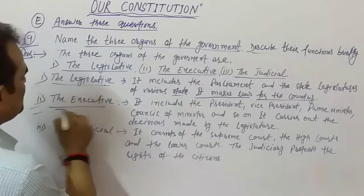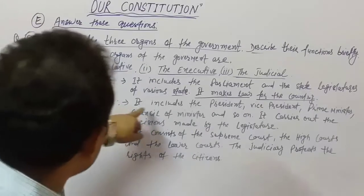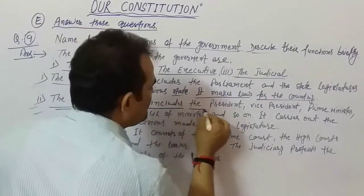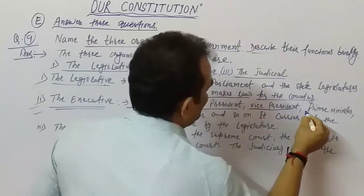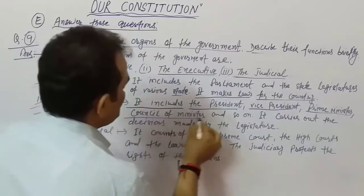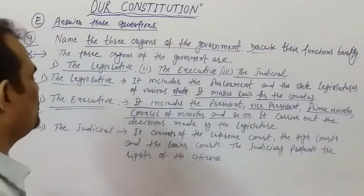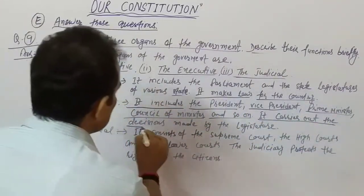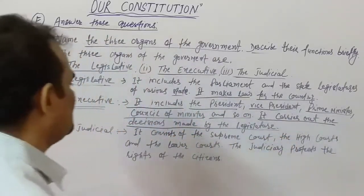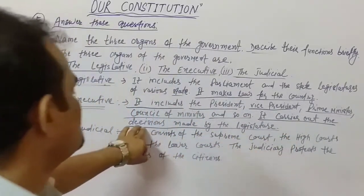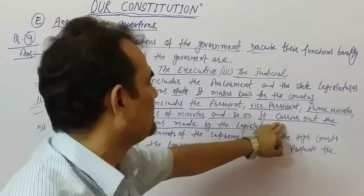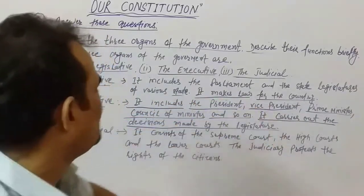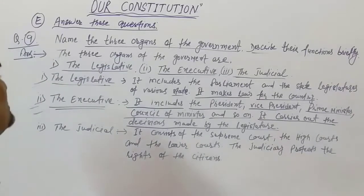The Legislative includes the Parliament and the state legislatures of the various states. It makes law for the country. The Executive includes the President, Vice President, Prime Minister, Council of Ministers, and so on. It carries out the decisions made by the Legislature.